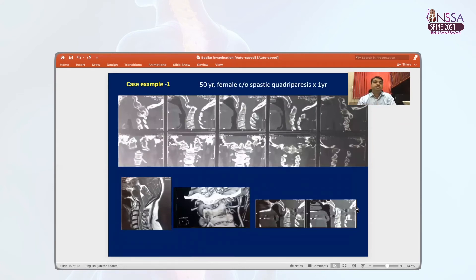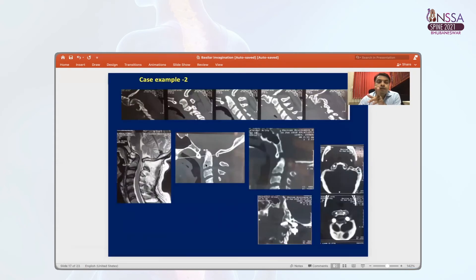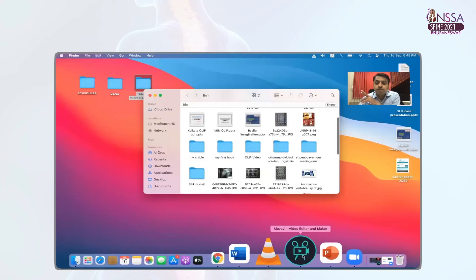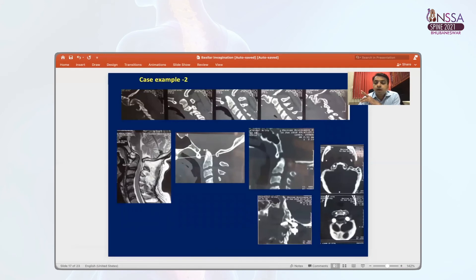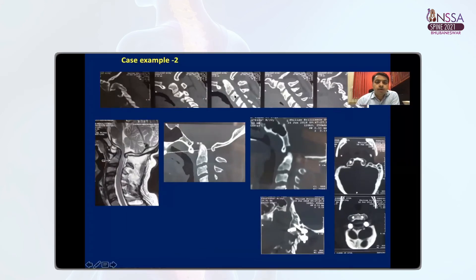Case example: a 50-year-old female with spastic quadriparesis. Looking at both parasagittal cuts — the facet joints are horizontal and symmetrical, and the degree of BI is mild. In such a case, C1-C2 distraction and fixation will completely reduce both BI and AAD. Another case: joints are vertical on both sides but symmetrical, so you can plan for complete C1-C2 distraction and, with spacer application, reduce both BI and AAD with C1-C2 fixation.